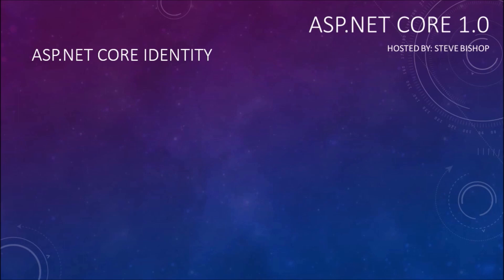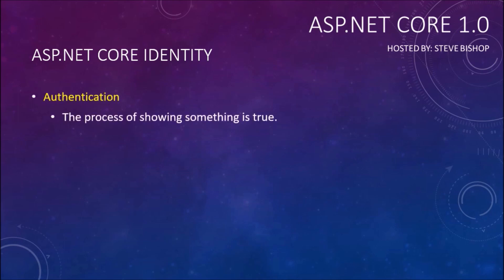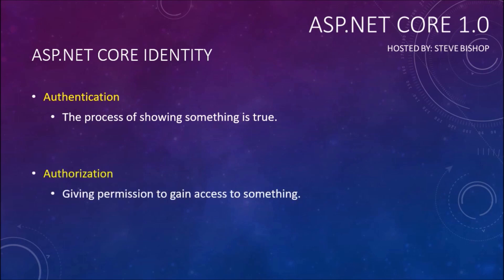ASP.NET Core Identity can actually be broken down into two different things. One is authentication, which is the process of showing something is true, and then there's authorization, or giving permission to gain access to something. You can think of the authentication process as figuring out how to determine whether or not somebody is who they say they are. And then the authorization part is determining whether or not that person should actually have access to that particular entity within your application.